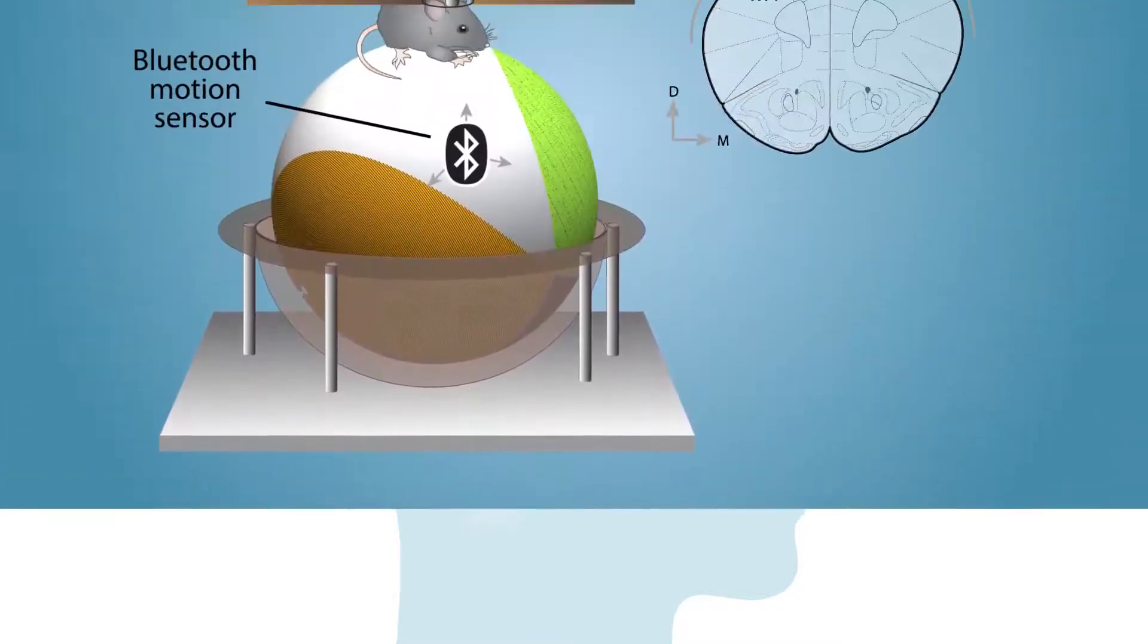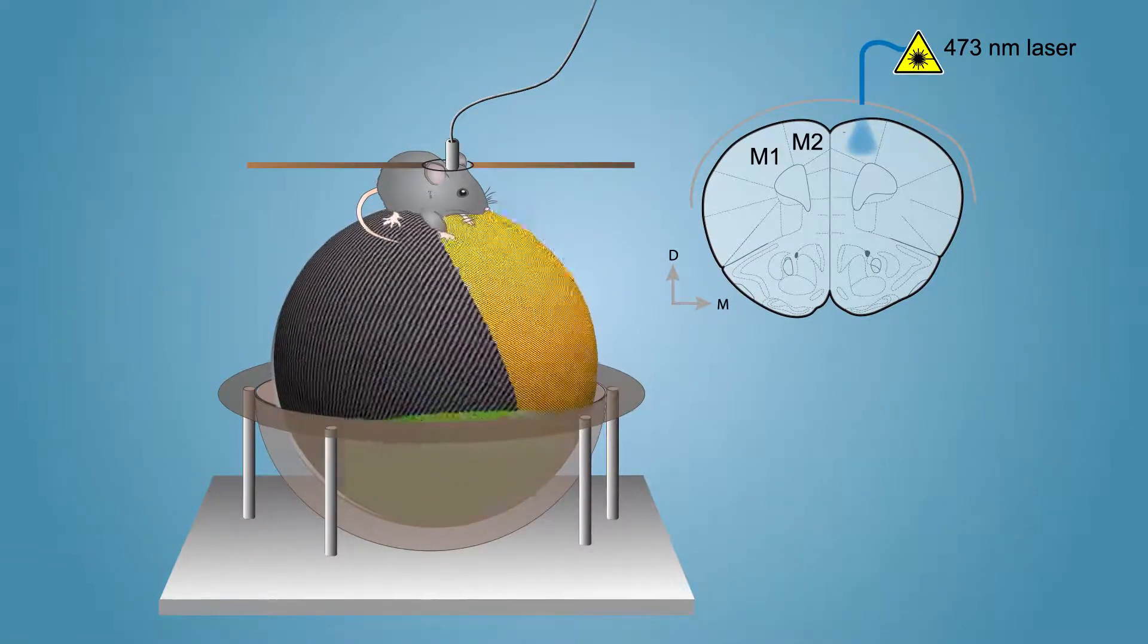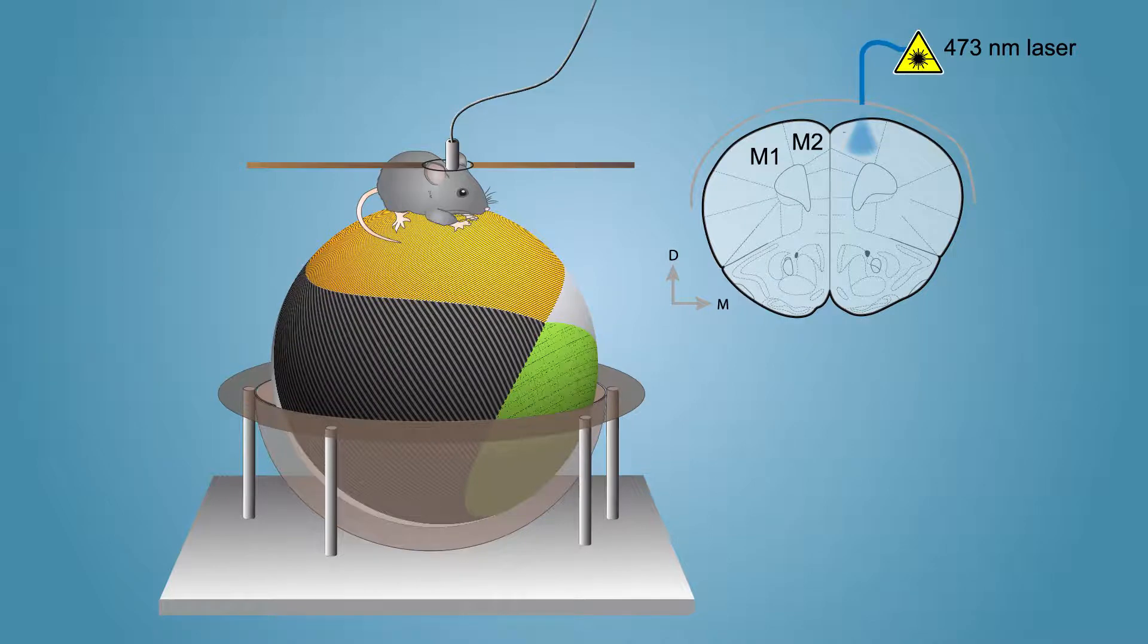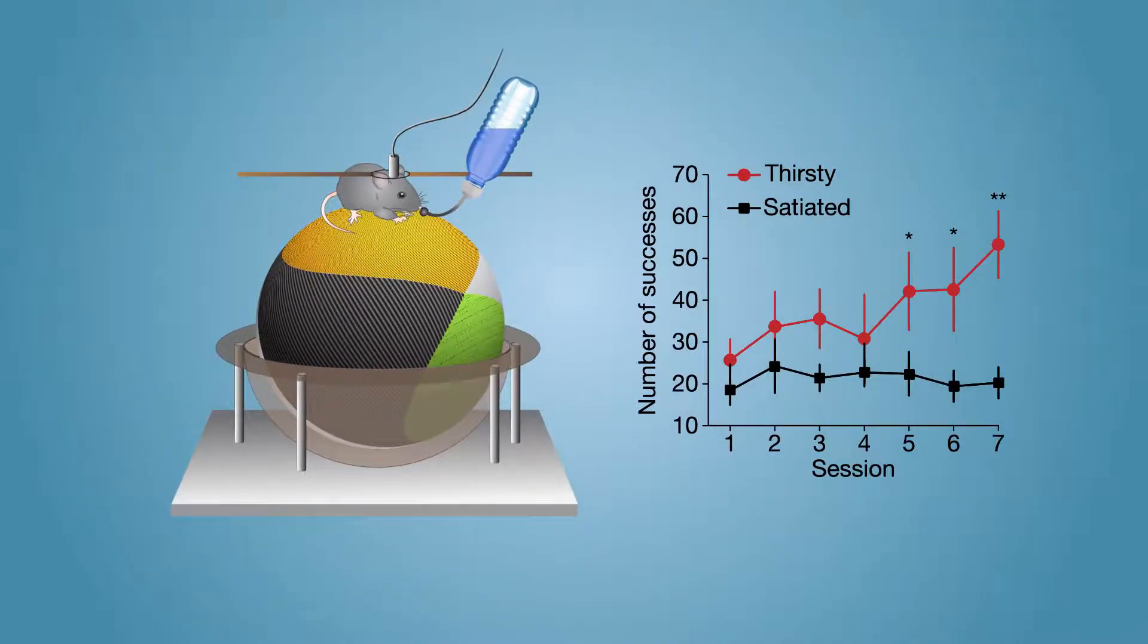The scientists expressed the dopamine sensor in the brains of mice trained to walk on a ball with various textures. When the mice stopped on a specific texture, they got a drink of water. Thirsty mice were motivated to find the water-associated texture to receive their refreshing reward.